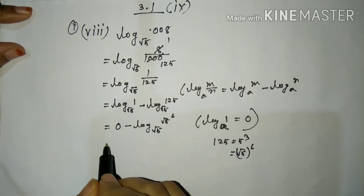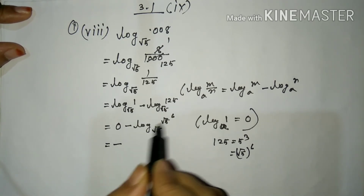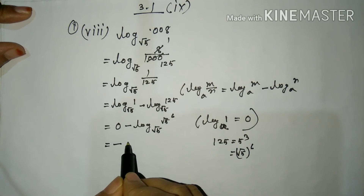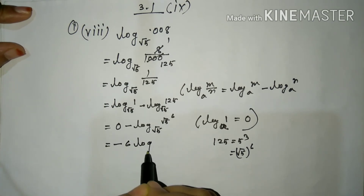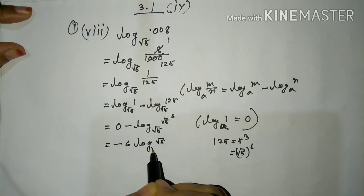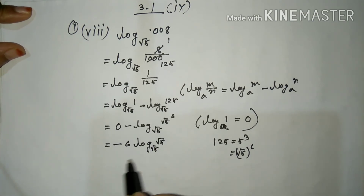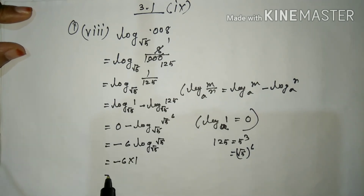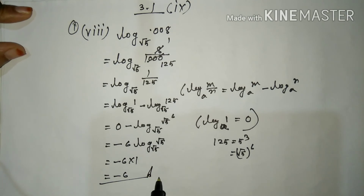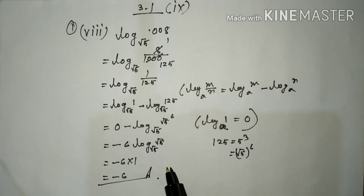This gives us minus 6 times log root 5 to the base root 5, which equals minus 6 into 1, equal to minus 6.